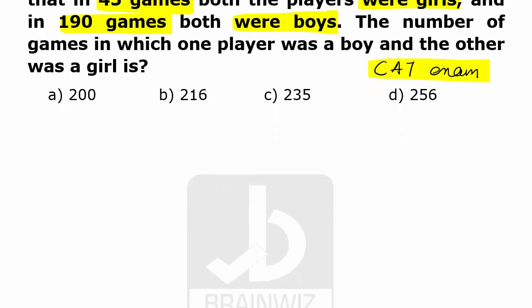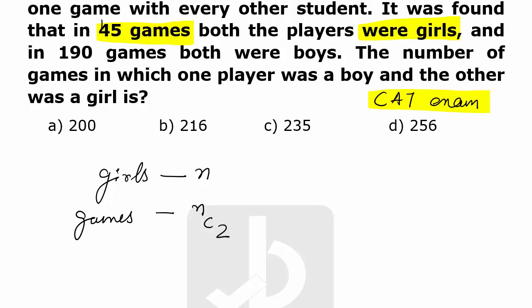So let the number of girls be n, and number of games will be nC2. The 45 games are where both players were girls, so nC2 equals 45 and we have to find out what is the value of n.